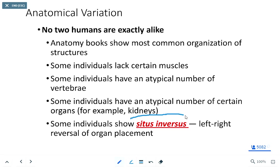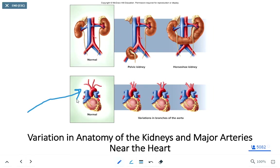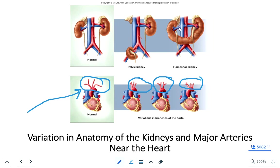Some individuals are really, really different looking. If they have situs inversus, they have the left and right flip-flopped of their internal organs. Generally speaking, that's only noticed when there's some kind of surgery or imaging performed — most people with situs inversus don't even know. There's also going to be variations in the aorta. The differences you see in lab and the teaching models are good; they help prepare you for the differences you'll see in the real world.